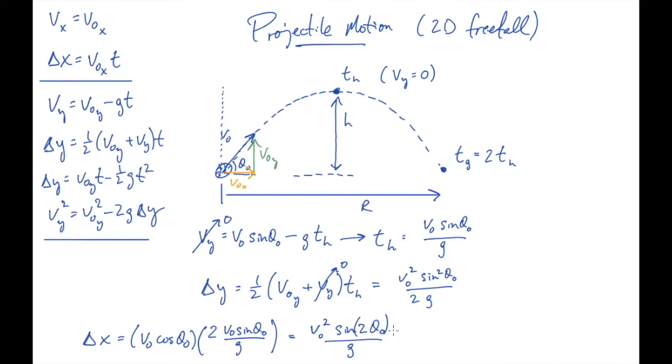And this by the way is where we see that to make an object go as far sideways as you possibly can for a given launch speed, you want to launch it at an angle of 45 degrees. Because sine is maximized when the argument is 90 degrees. So we want twice theta naught to be 90 degrees. So theta naught needs to be 45 degrees to make delta x, the range, as large as possible. So if you want an object to go as far horizontally as possible you launch it at 45 degrees.